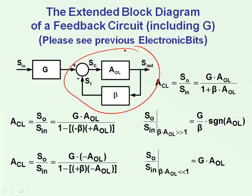But in order to make it more general and applicable to all configurations, including the current feedback amplifier, we do need to include a G block, which is the transfer ratio between the input, the actual input, and the summing point at the input.